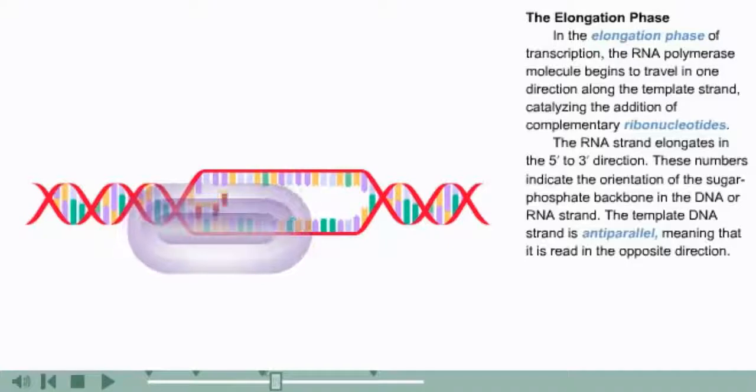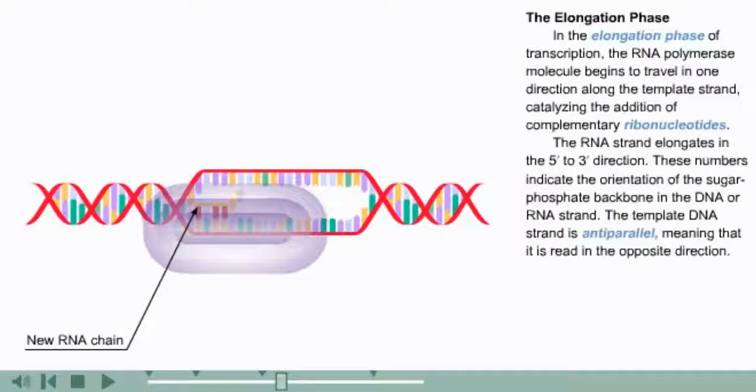the addition of complementary ribonucleotides. The RNA strand elongates in the 5' to 3' direction. These numbers indicate the orientation of the sugar-phosphate backbone in the DNA or RNA strand. The template DNA strand is antiparallel,